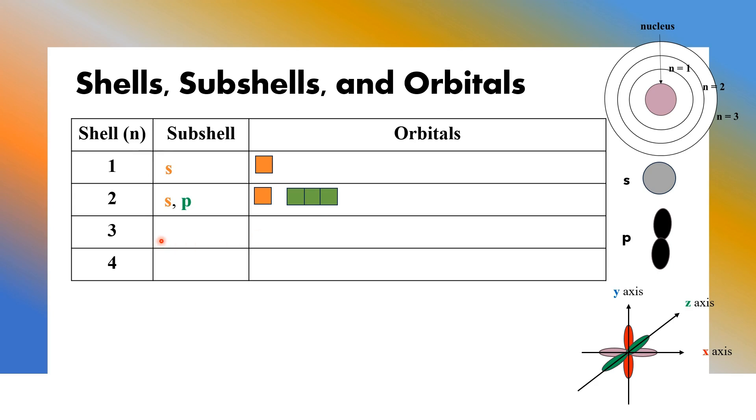Next energy level 3 or shell number 3. Shell number 3 containing three types of subshells: s subshell, p subshell and the d subshell. s subshell only one s orbital, p subshell three p orbitals, d subshell there are five d orbitals. Fourth one, shell number 4: s p d f, four types of subshells present. s subshell s orbital, p subshell three p orbitals, d subshell five d orbitals, and f subshell seven f orbitals.